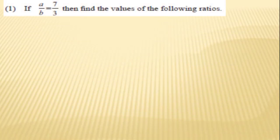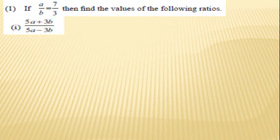First question: if A upon B is equal to 7 upon 3, then find the values of the following ratios. Here an example is given: (5A + 3B) upon (5A - 3B). These examples are solved using Properties of Equal Ratios rather than other methods.